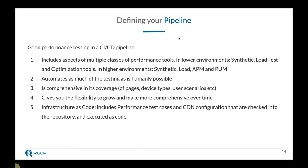Good performance testing is also comprehensive in its coverage of pages, device types, and user scenarios. It gives you flexibility to grow and become more comprehensive over time. It also includes what we call infrastructure as code — performance test cases and CDN configurations that are checked into the repository and executed as code. Ideally, when developers build a new feature or page, it's automatically added into the performance testing configuration as well.